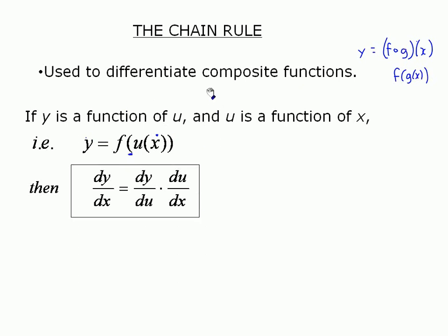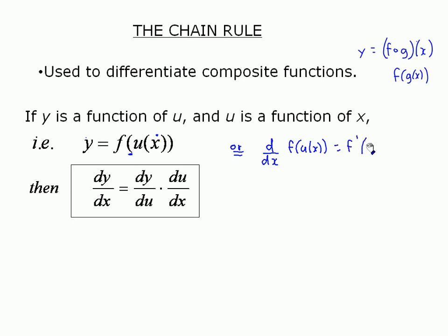Put a box around that equation because it's so important. Another way to look at it — less common, at least for me — is: the derivative of f at u at x equals f prime at u at x, multiplied by u prime at x. You start on the outer function, differentiate it, and multiply it by the derivative of the inner function.